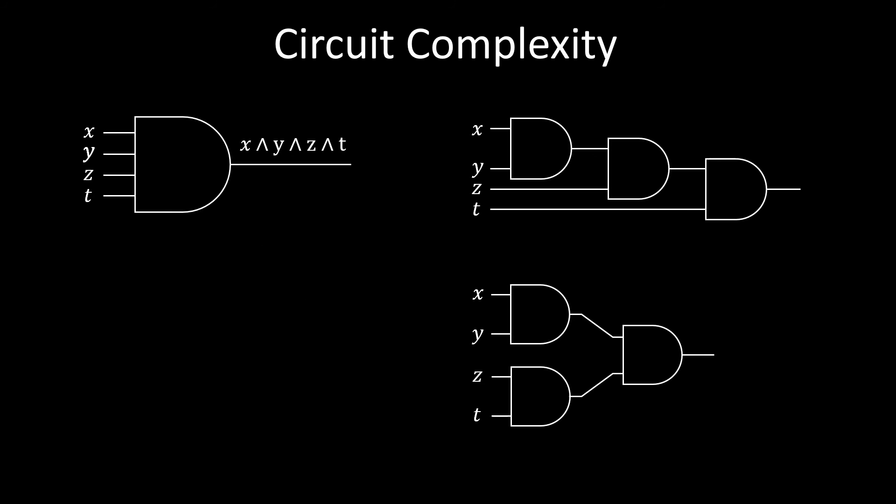The top circuit is a fully sequential circuit, having a depth of three gates. However, the bottom circuit is more parallel, computing two conjunctions at the same time, and then using a third gate on the results. Thus, it has a depth of only two gates, hence being more efficient. In general, this binary tree-shaped construction can be used to implement an n-input conjunction with a circuit of logarithmic depth.